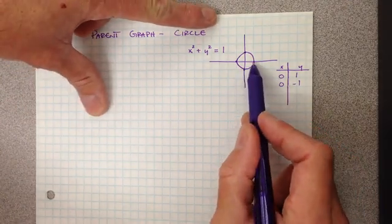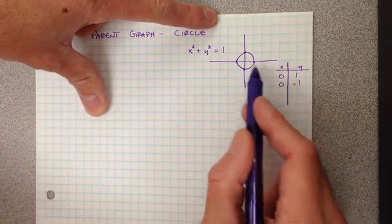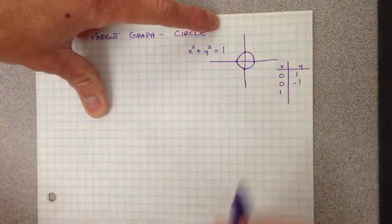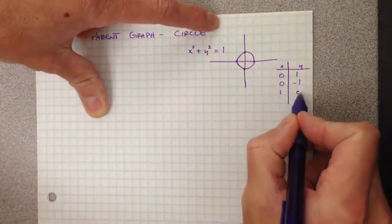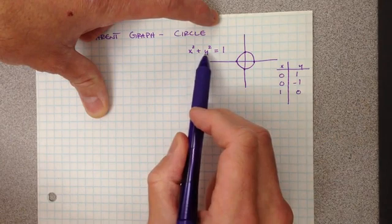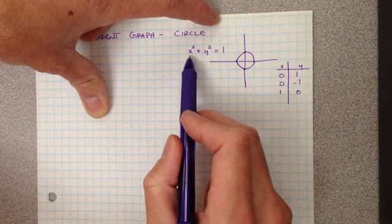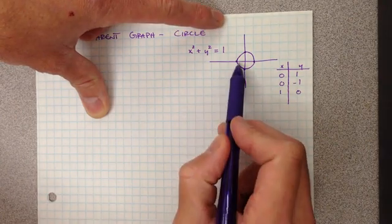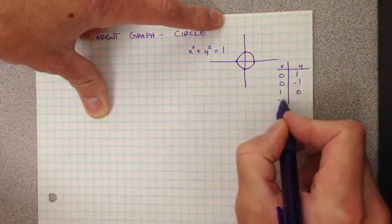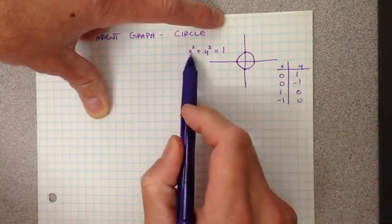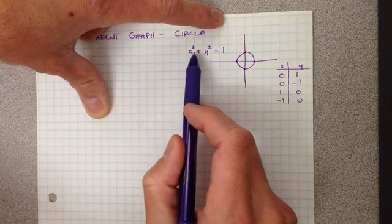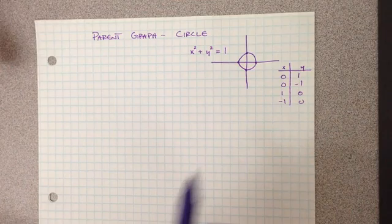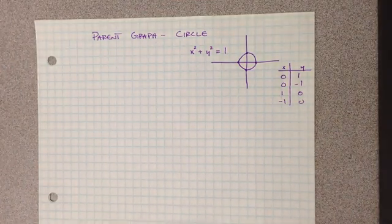We can also look at the x-value of positive one, which gives us a y-value of zero. When we put those back into our equation: one squared plus zero squared equals one, so that holds true. Similarly, negative one squared is one, and one plus zero is one. Those are our points for the circle.